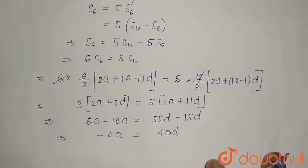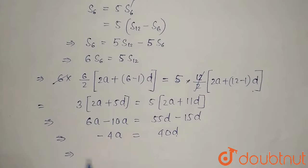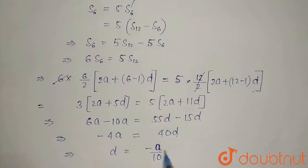From here we can say that d equals -a/10. Now here a is given as 100, that equals -100/10.